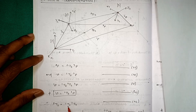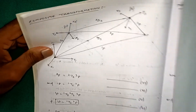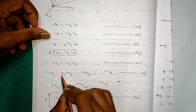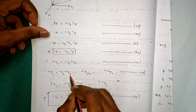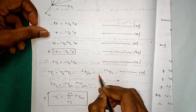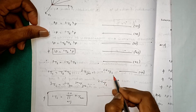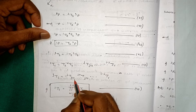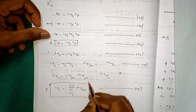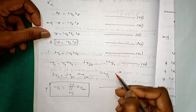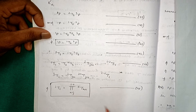So 1t3 is equal to 1t2 times 2t3, and so on: jt(j+1) ... up to (i-1)ti. In general, jti is equal to jt(j+1) times (j+1)t(j+2) ... times (i-1)ti. This is the general formula for composite transformation.